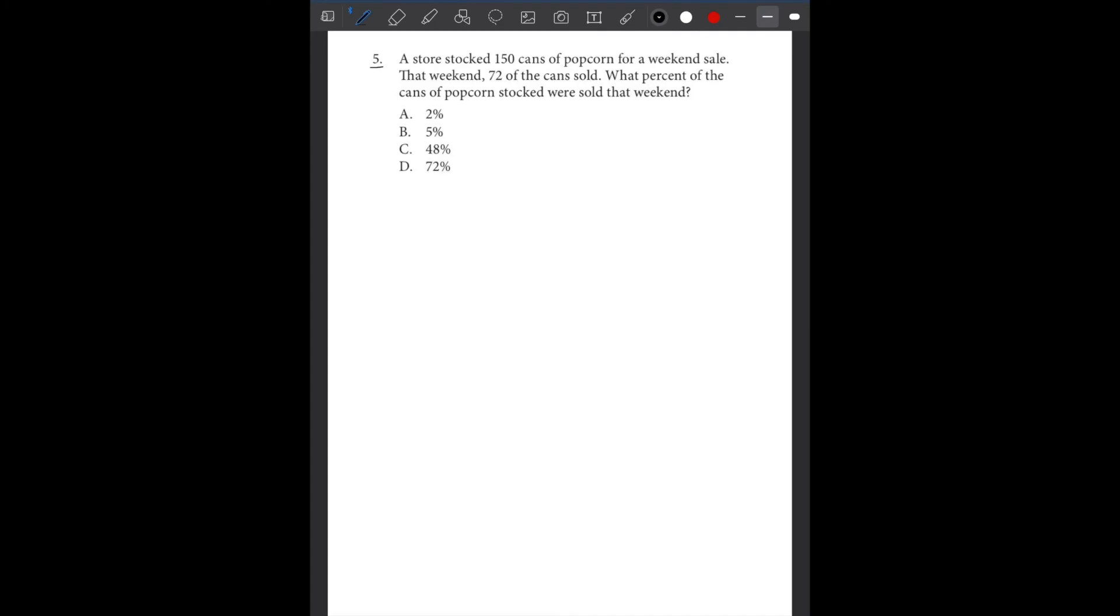Number 5. A store stocked 150 cans of popcorn for a weekend sale. That weekend, 72 of the cans were sold. What percentage of the cans of popcorn stocked were sold that weekend? So the total amount of cans they had were 150. The ones that were sold were 72. So basically, we're going to divide to solve the percentage of cans of popcorn that were stocked.